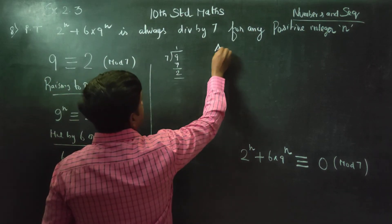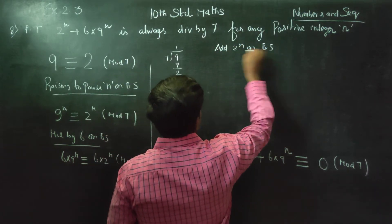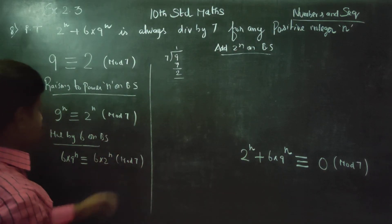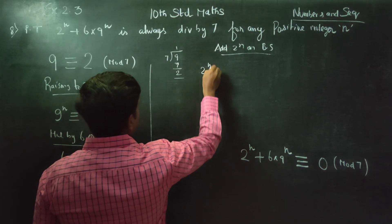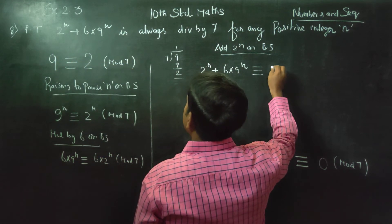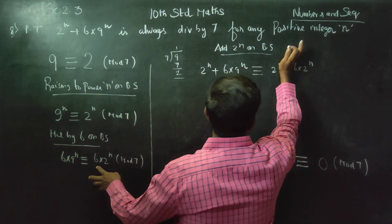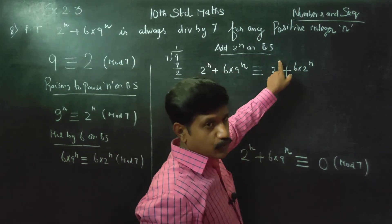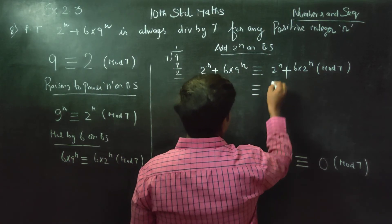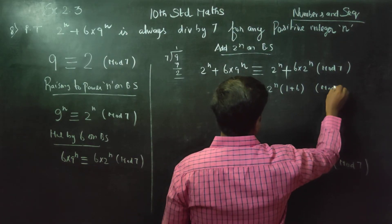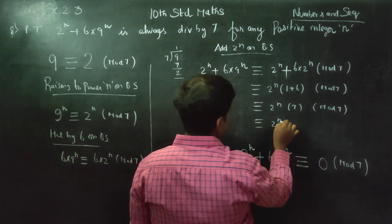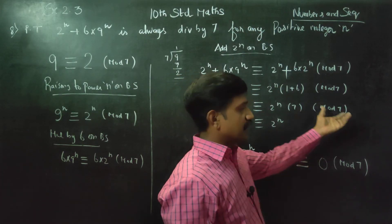I am going to add 2 power n on both sides. So 2 power n plus 6 into 9 power n is congruent to 2 power n plus 6 into 2 power n mod 7. Taking 2 power n common, we get 2 power n into (1 plus 6) mod 7, which equals 2 power n into 7 mod 7, which is congruent to 0 mod 7.